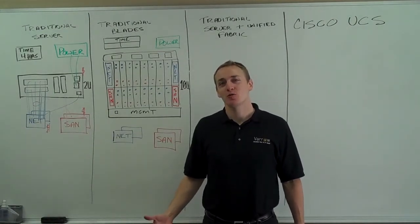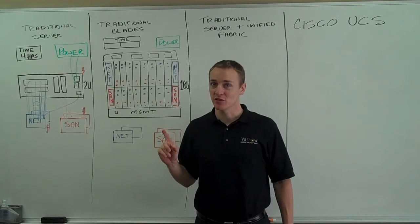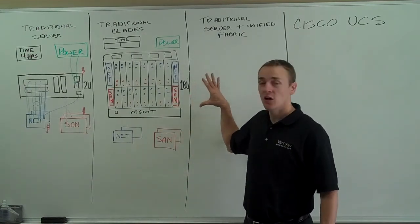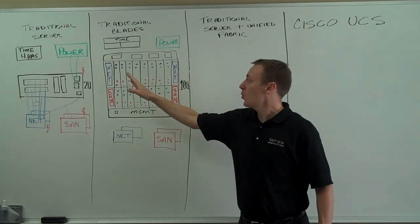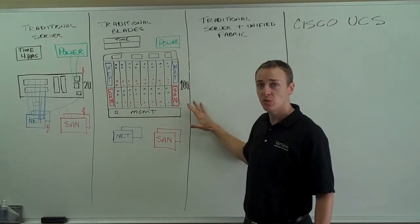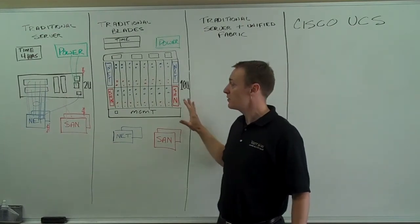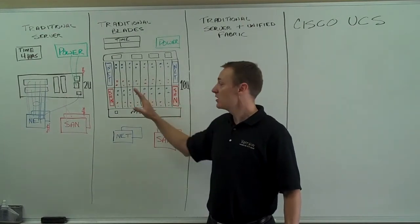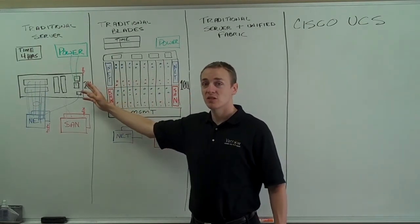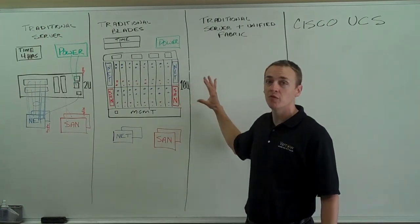Now I want to talk to you about traditional blade servers — not Cisco UCS blade servers, but traditional blade servers. We have here a traditional blade chassis with 16 blades in it. This chassis is 10U, and you can see it saves a lot of space. If I could fit 16 servers into 10 rack units, where 16 servers would have taken 32 rack units, I really solved the problem of space.